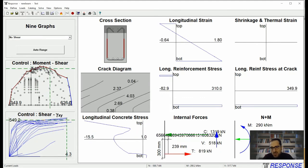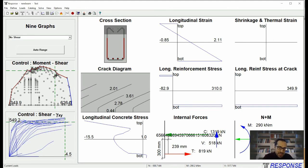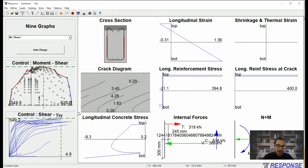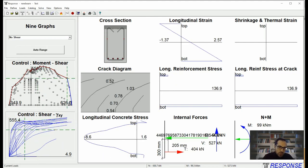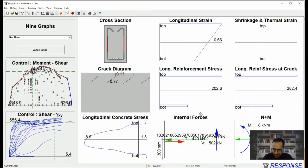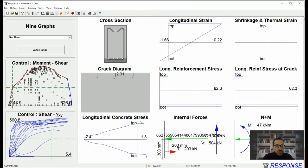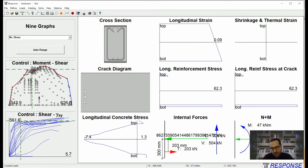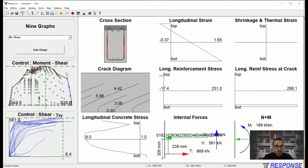So it shouldn't take too long, maybe a couple of minutes, and then this would stop and you would be able to click on the envelope points and see the corresponding result. As you can see, increased moment reduces the shear capacity and so on.